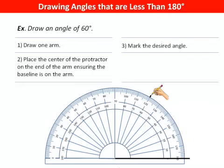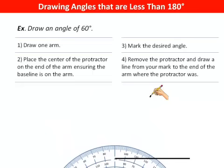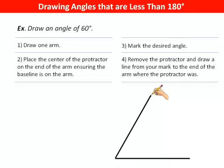mark the desired angle with a pencil. Lastly, remove the protractor and draw a line from your mark to the end of the arm where the protractor was.